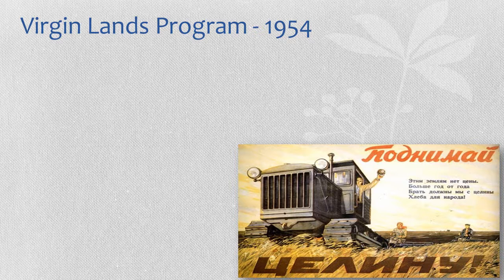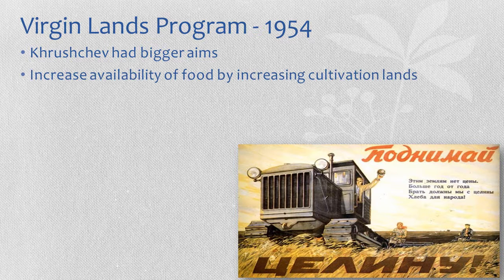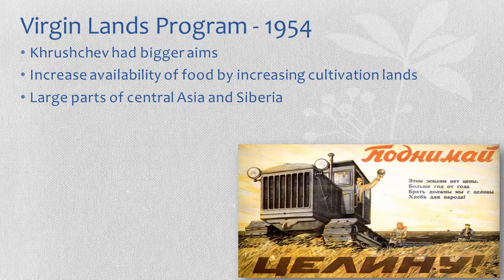So Khrushchev implemented the Virgin Lands Program. The idea was to really intensify and maximize the use of land, thereby maximizing output. The slow and steady gains on collective farms were not good enough for Khrushchev. These lands would increase the area under cultivation — lands that had never been used as agricultural land before, specifically large parts of Central Asia and Siberia, now used for agriculture.